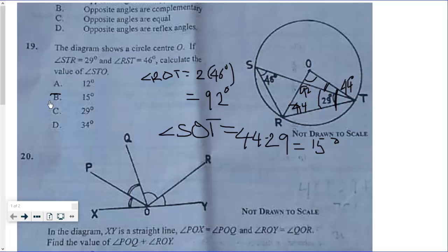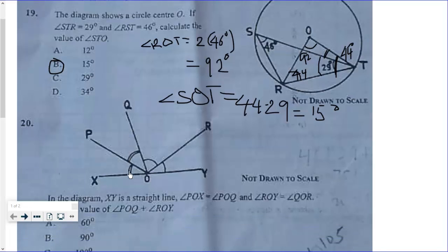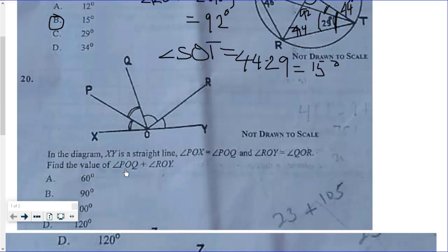Hence the answer for question 19 is B. Then they say in the diagram XY is a straight line, and we know that the sum of angles on a straight line should add up to 180 degrees.